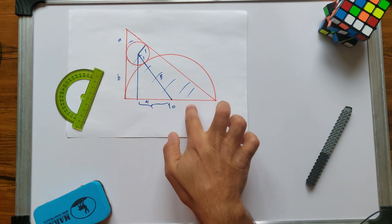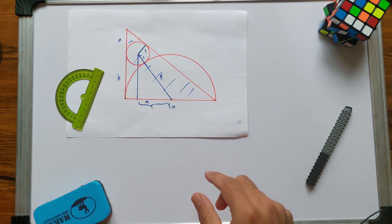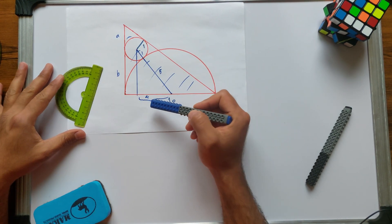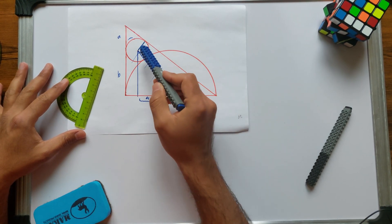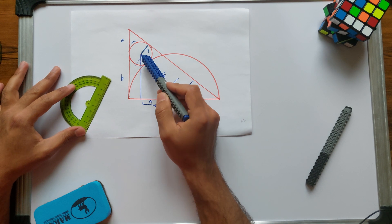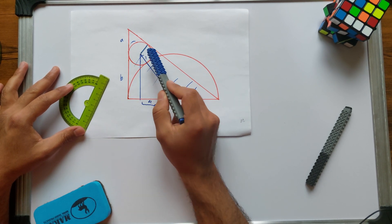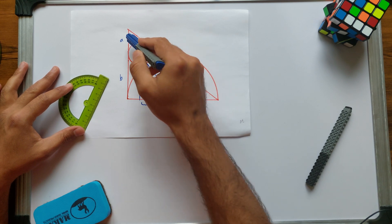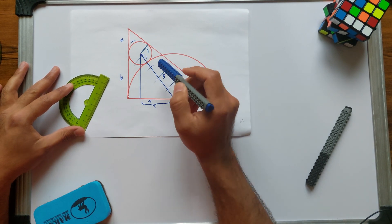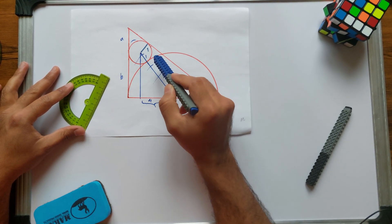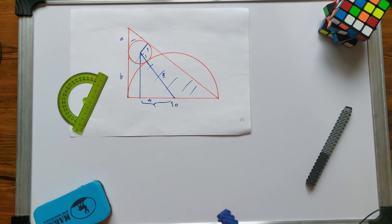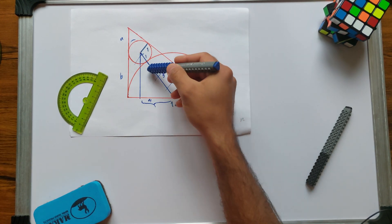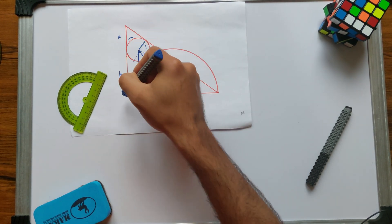On the base of this triangle we have a semicircle with a diameter of 10 — the base of this triangle. And we have another smaller circle here with a radius of 1, which is inscribed inside this area with these two sides of the triangle and is also tangent to the semicircle. Our mission is to calculate the area of this blue right angle triangle.